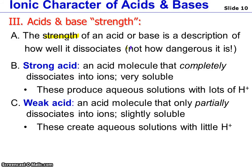Strength does not have to do with how dangerous it necessarily is. When you want to know how dangerous an acid is, you have to look at a couple things in combination. You need to look at the strength of the acid, the molarity or concentration of the acid, and its pH. So the danger of an acid depends on a few factors.